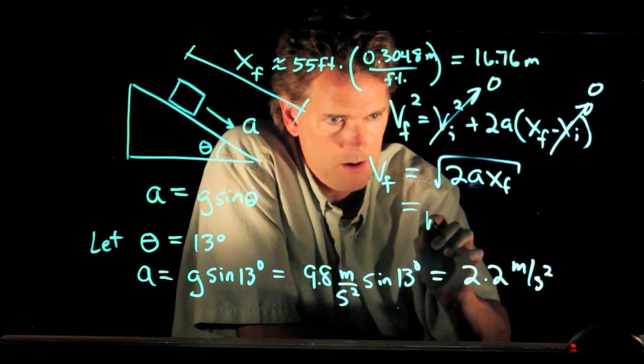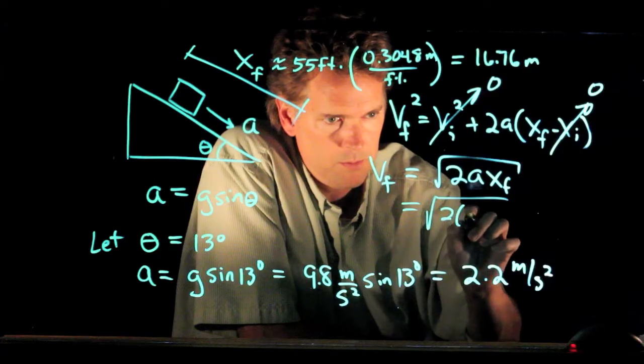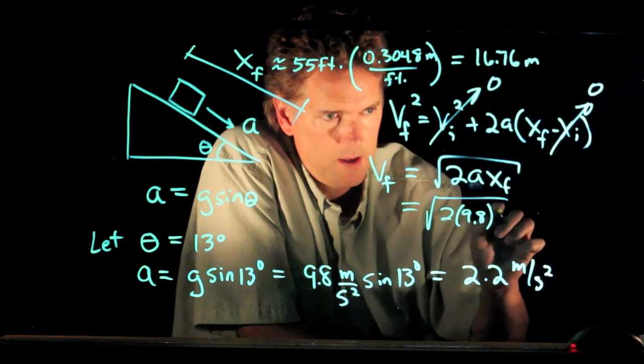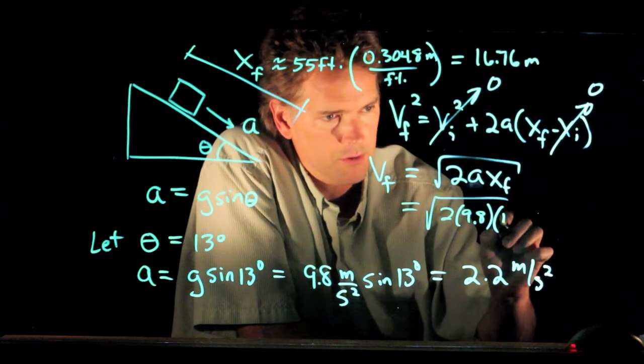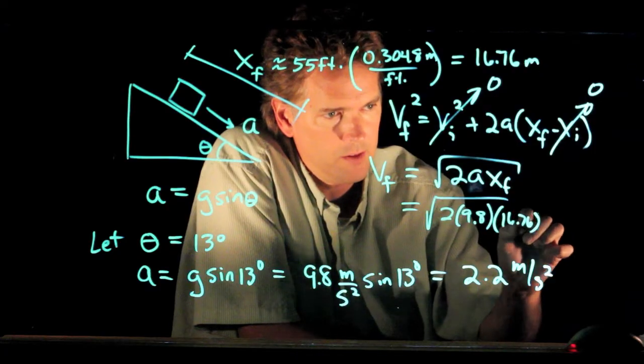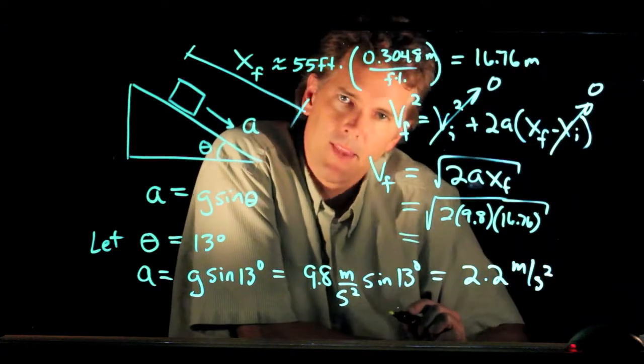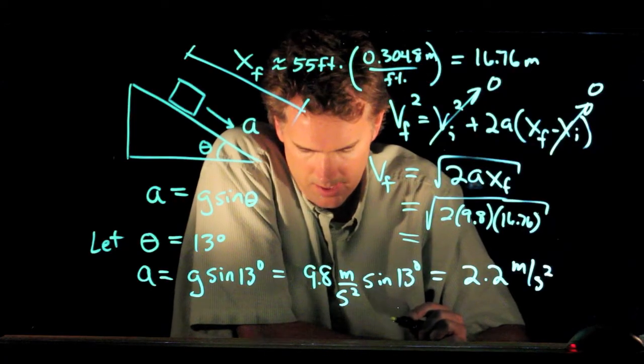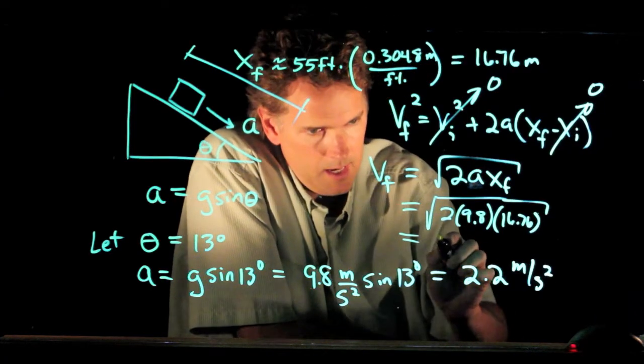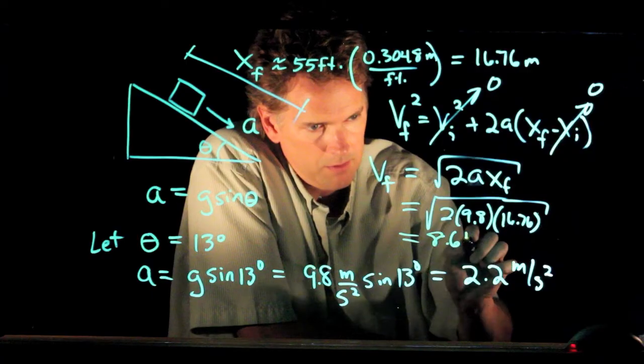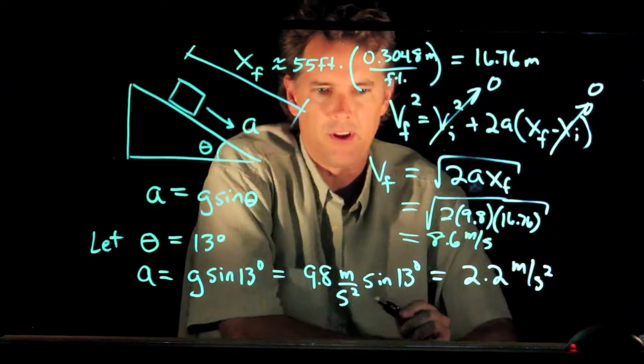Okay, and so now let's plug all that in here. We have two, we have 9.8, we have xf, which is 16.76. We're going to multiply all those, we're going to take the square root of it. And when you're done, you get a number that looks like 8.6 meters per second.